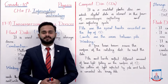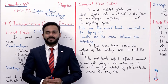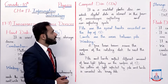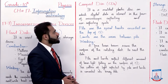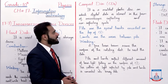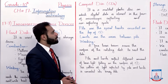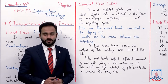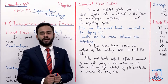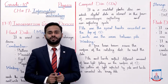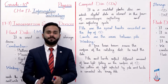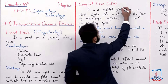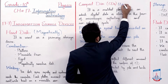Now the next device is compact disk, which is CD. It is a molded plastic disk on which digital data is stored in the form of microscopic reflecting and non-reflecting spots. Basically, compact disk uses laser technology to store and read data. So we can say that it uses laser technology to store data on a molded plastic disk.